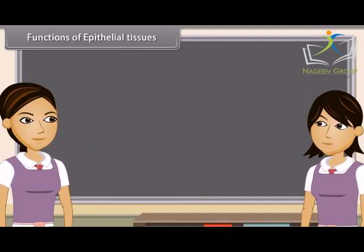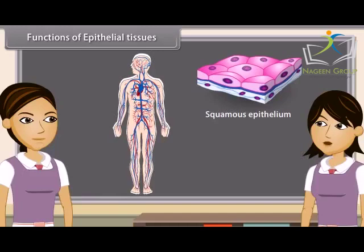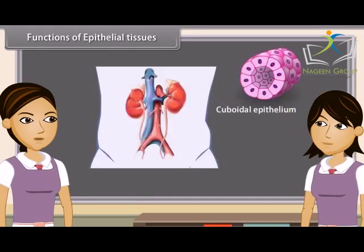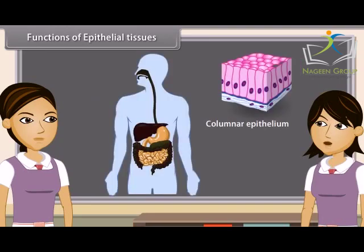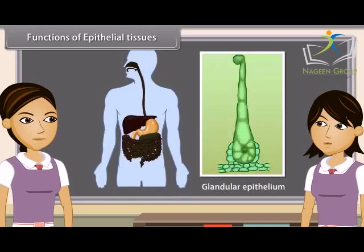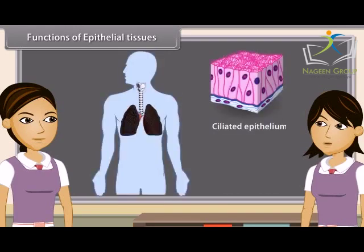Functions of epithelial tissues: Squamous epithelium protects the underlying parts of the body from mechanical injury, entry of germs, chemicals and also from drying. Cuboidal epithelium helps in absorption, excretion and secretion, and also gives mechanical support. The main function of columnar epithelium is absorption and secretion. The main function of glandular epithelium is secretion from these glands. The rhythmic, concentrated beating of cilia of ciliated epithelium moves solid particles in one direction through ducts.